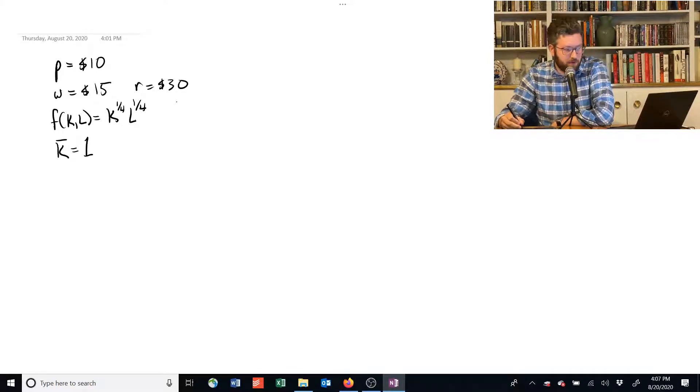First things first, set up the profit function. Price times quantity minus WL plus RK. Now let's substitute everything we know.